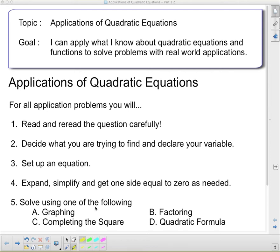So for all application problems, you will read and reread the question carefully. You will decide what you're trying to find and declare your variable. You will set up an equation. You will expand, simplify, and get one side equal to zero as needed.